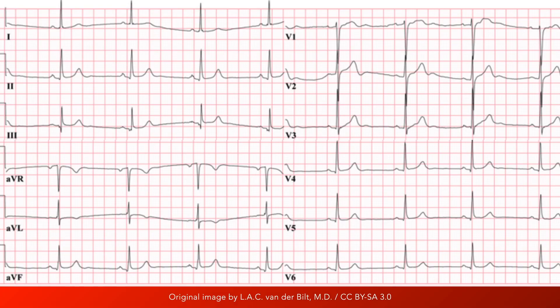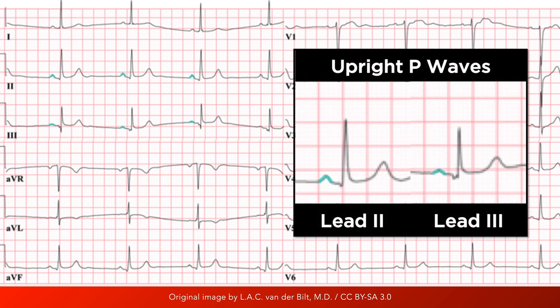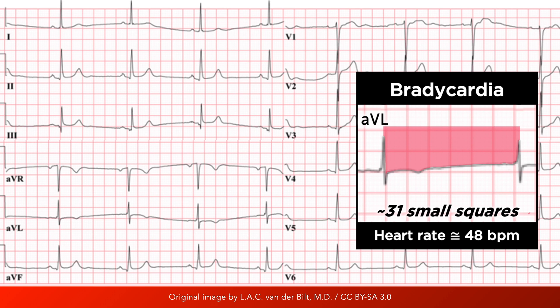The ECG characteristics of sinus bradycardia are essentially the same as sinus rhythm, but at a slower heart rate. An upright P wave of constant morphology precedes every QRS complex, and a QRS complex follows every single P wave. The heart rate in a patient with sinus bradycardia is less than 60 beats per minute, which correlates with an RR interval of greater than 1 second. And finally, the rhythm is regular — that is, the RR intervals remain constant.